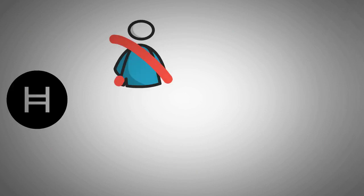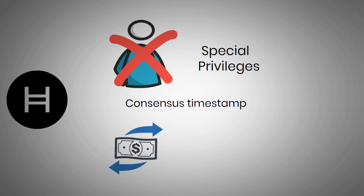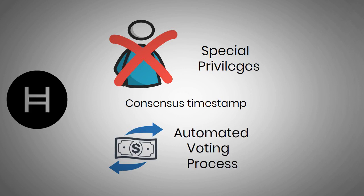Moreover, Hedera Hashgraph is fair because no leader, node, or miner has special privileges to determine the consensus timestamp. Rather, the consensus timestamps for transactions are calculated through an automated voting process, through which the nodes establish consensus democratically and collectively.